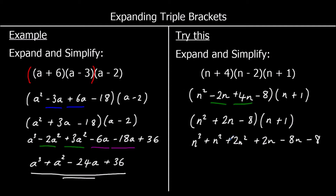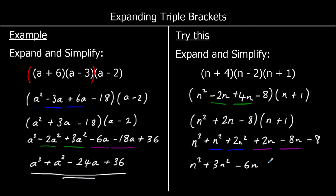So collect the like terms. We've got two n squared terms and two n terms. So we've got n cubed. We've got n squared plus 2n squared, which is 3n squared. We've got 2n take away 8n, which is negative 6n. And minus 8 on the end.